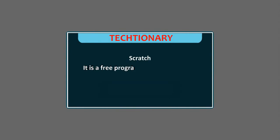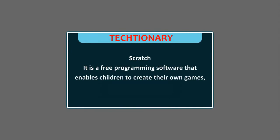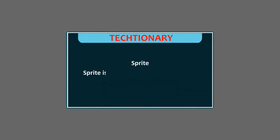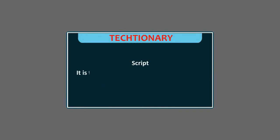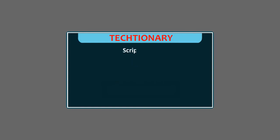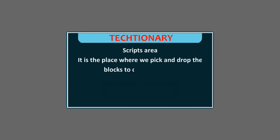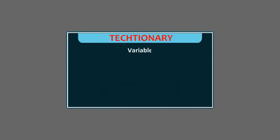Scratch is a free programming software that enables children to create their own games, animated stories and interactive art. A Sprite is a small graphic character that performs actions in a Scratch project. A Script is the collection of step-wise instructions given to a sprite. The Scripts Area is the place where we pick and drop the blocks to create a script. A Variable is an element, value or feature that is liable to vary or change.